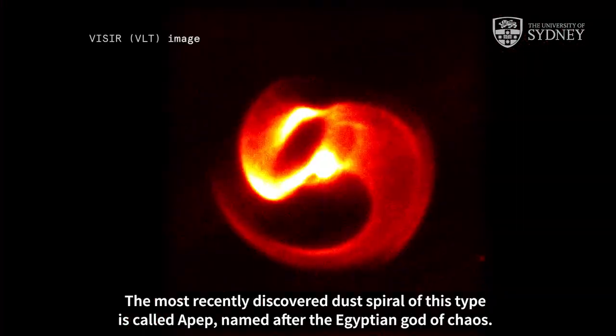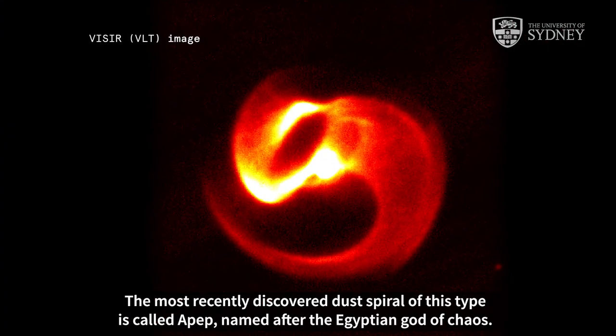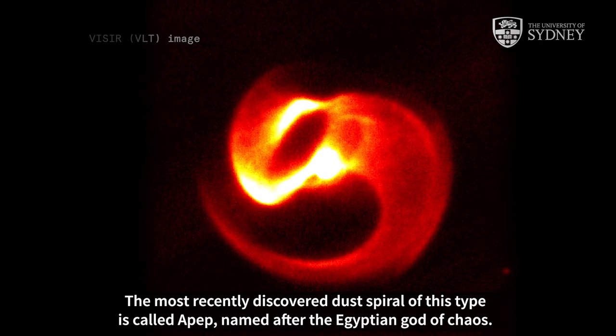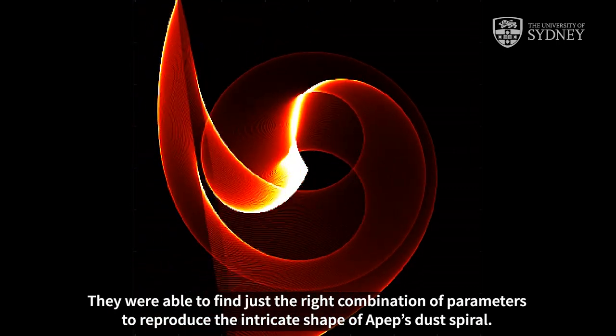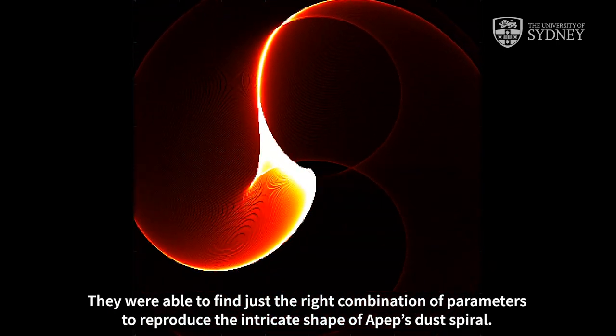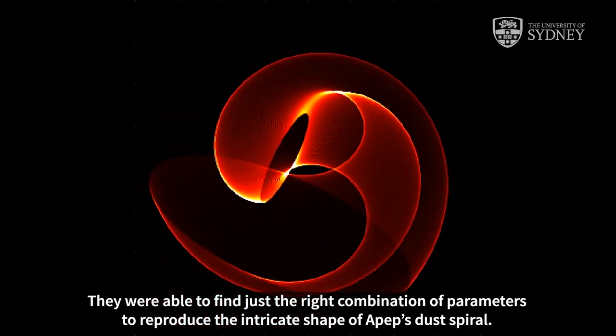The most recently discovered dust spiral of this type is called APEP, named after the Egyptian god of chaos. Scientists have recently produced a new model to explain this process in APEP. They were able to find just the right combination of parameters to reproduce the intricate shape of APEP's dust spiral.